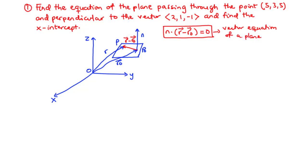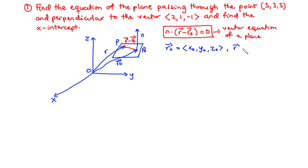Let's assume that we have the position vector R0, which is as a result of the point P0 having components x0, y0, z0, and the vector R also having components x, y, z, with the normal vector n having components a, b, c.